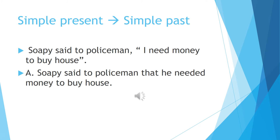The sentence in the inverted commas has changed from simple present to simple past. 'I' changes to 'he', and everything else remains the same. 'Soapy said to the policeman' remains the same — there is no change.